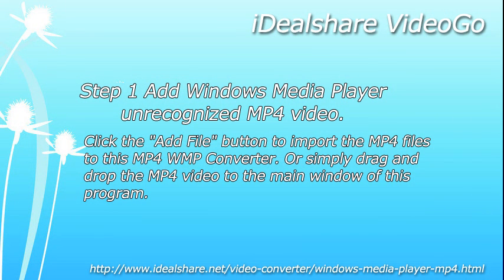Step 1. Add files to Windows Media Player. For the player unrecognized MP4 video, click the Add File button to import the MP4 files to this MP4 WMP Converter. Or simply drag and drop the MP4 video to the main window of this program.